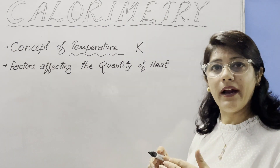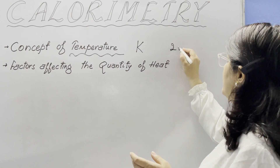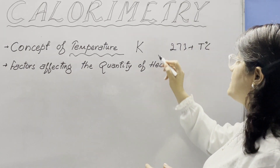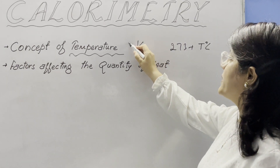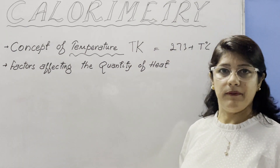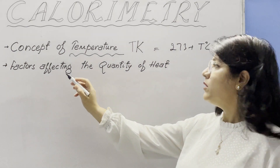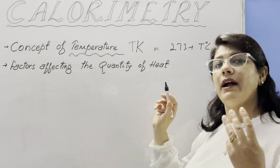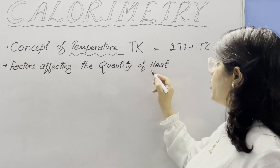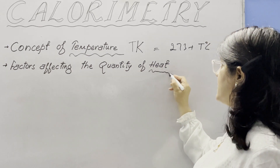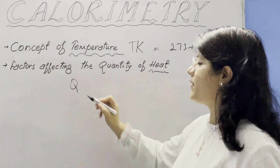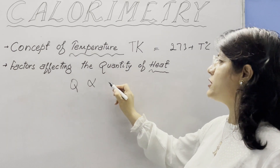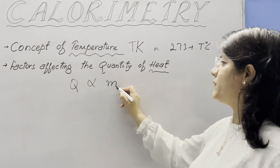We need to add 273 to temperature in degree Celsius to convert it into temperature in Kelvin. Now, factors affecting the quantity of heat — there are three factors. The quantity of heat is depicted by Q. First, Q is directly proportional to the mass of the body.